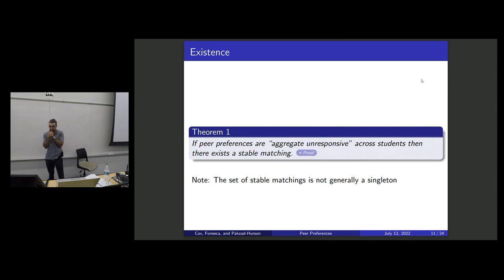So let me get into the results. The first result is really just an existence result, which is good if you actually want to construct a stable matching. If peer preferences are something like aggregate unresponsive, then there's going to exist a stable matching, but not necessarily just one. And so aggregate unresponsive, I mean, if we change the peers a little bit, not that many people are going to change their ordinal rankings. So small changes in peers lead to small changes in ordinal rankings.